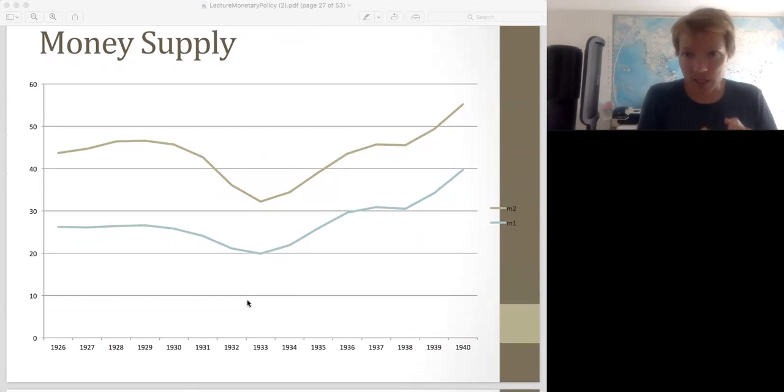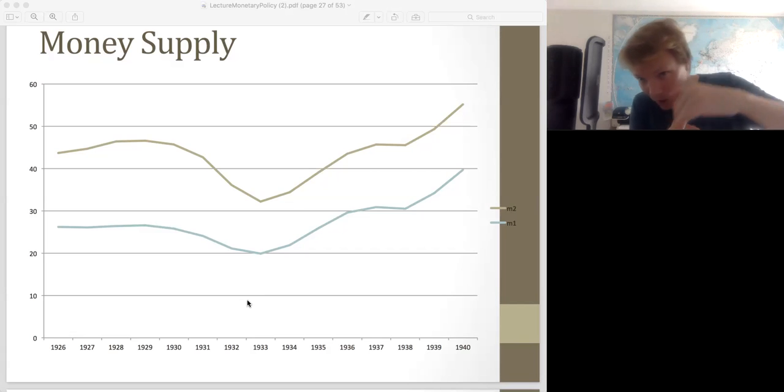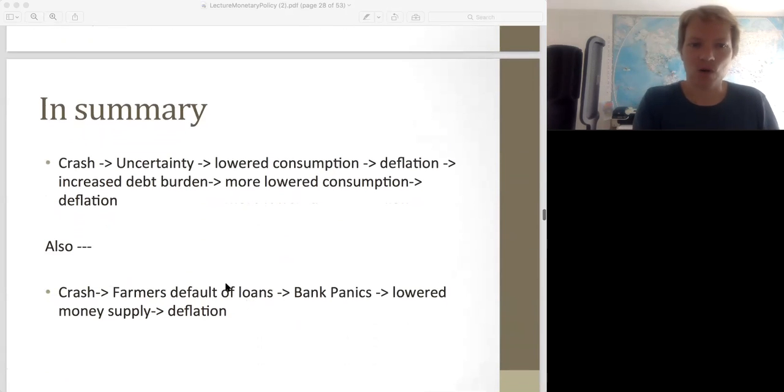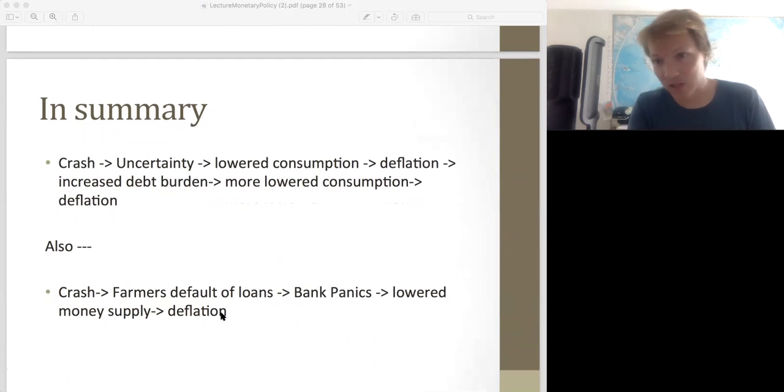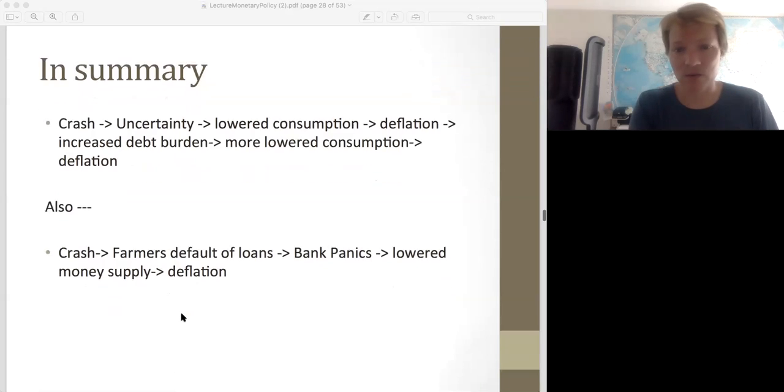So we have all these deflationary pressures that are happening. People are scared. They're spending less. The banks are scared. They're loaning out less. Households are putting much less money in the banks. All of these are pushing prices down. Alright. And so we have this crash leading to uncertainty, lower consumption. That's going to lead to deflation. That's going to lead to default, even more lower consumption. People are defaulting on their houses because remember now in real terms, their loans are higher. More deflation. So we get this deflationary spiral. Also the farmers are going to default on their loans because of the crash. That's going to lead to bank panics. And we just covered how that's also going to lead to deflation. So we have all this deflationary pressure. So when prices drop by that much, that's really bad for the economy.